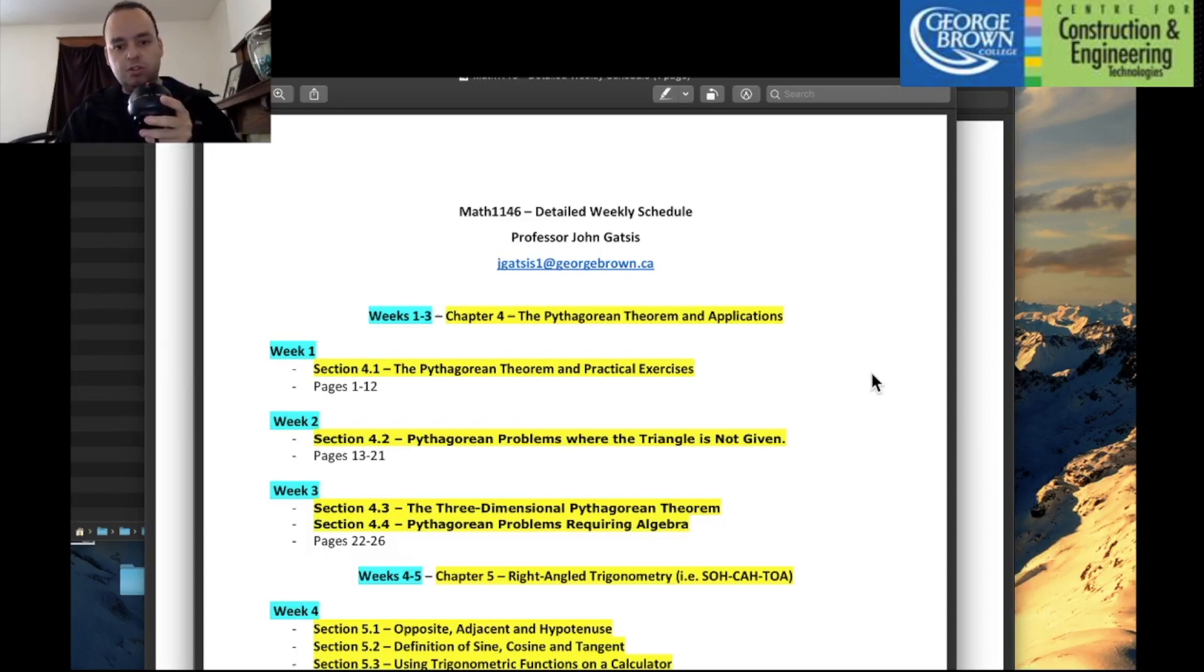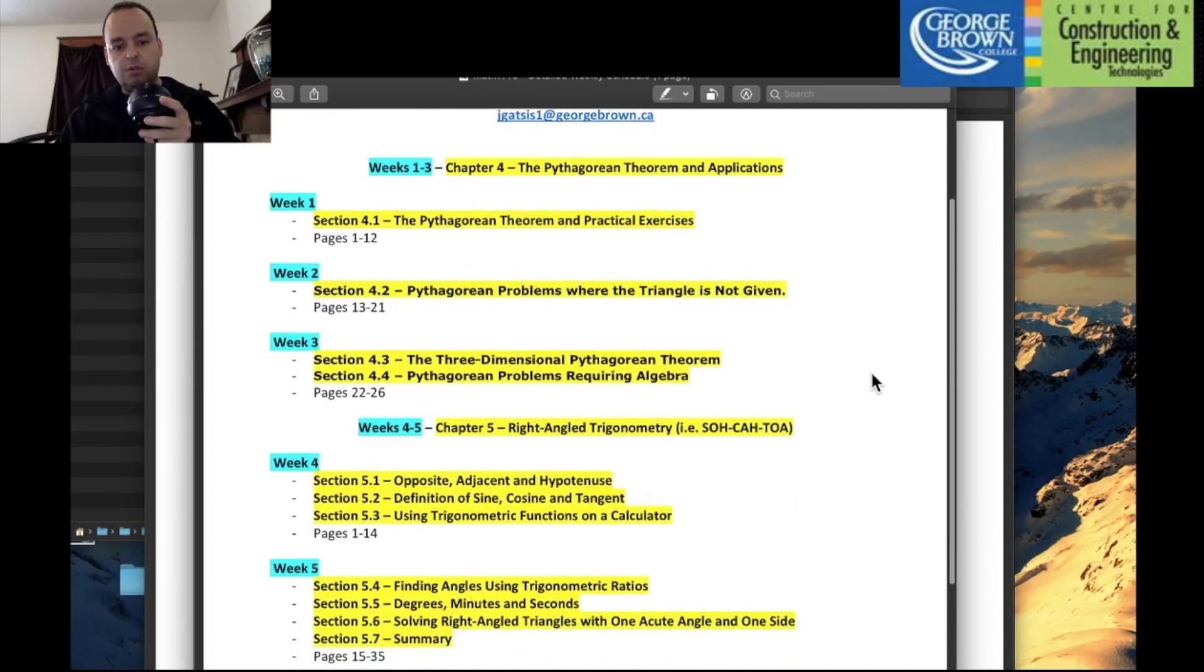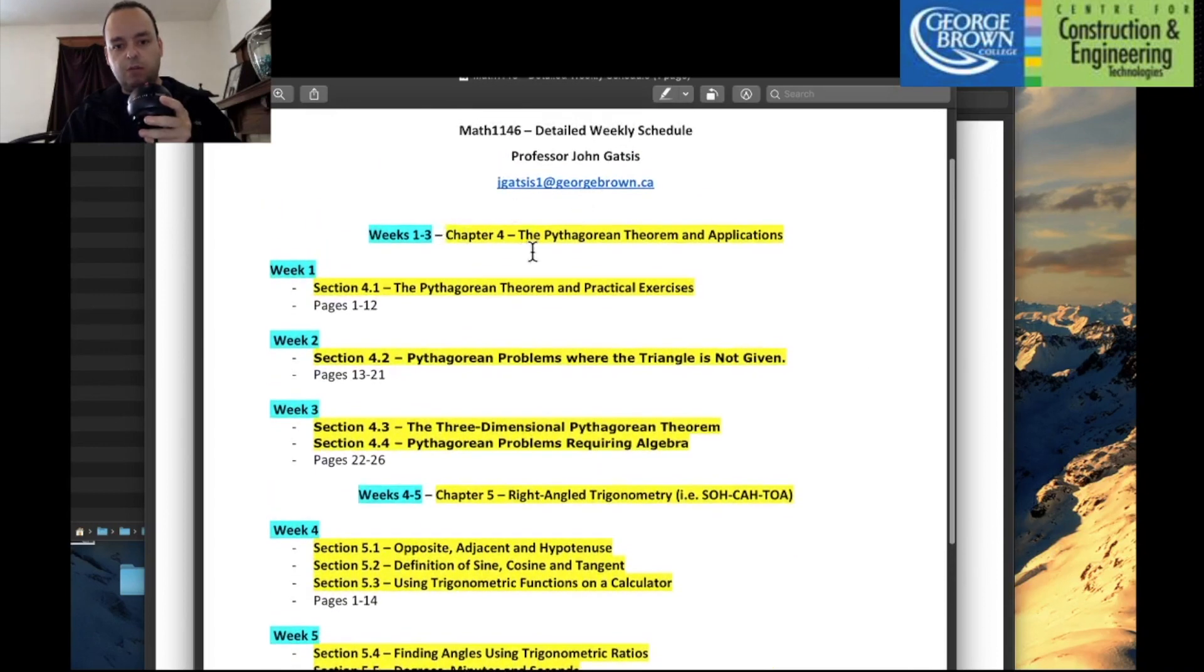As you can see, we have six weeks together, and in the first three weeks, I'm going to cover Chapter 4. Chapter 4 is on trigonometry, as is actually all the chapters I'll deliver with you. So I'm going to deal with the Pythagorean Theorem and several of its applications. When you think of Pythagorean Theorem, A squared plus B squared equals C squared, for example, it's not a joke.